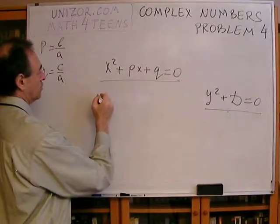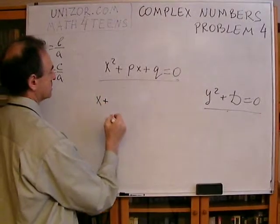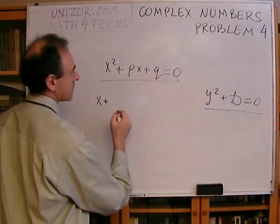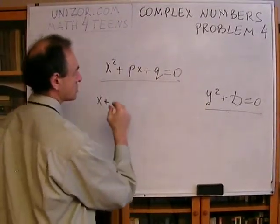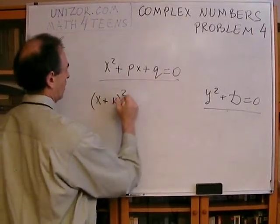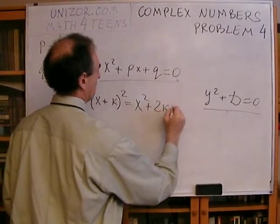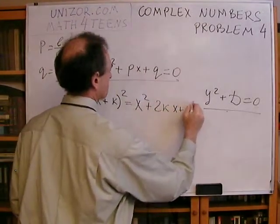Very simply, you understand that if I will do X plus, let's say, which letter should I choose? Let's say K, for instance, square. What is this? This is X squared plus 2KX plus K squared, right?